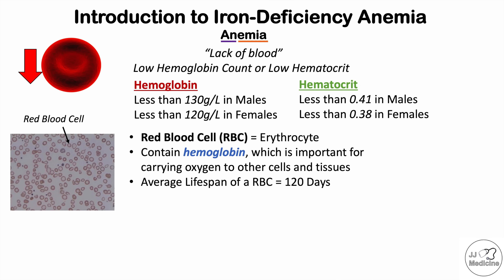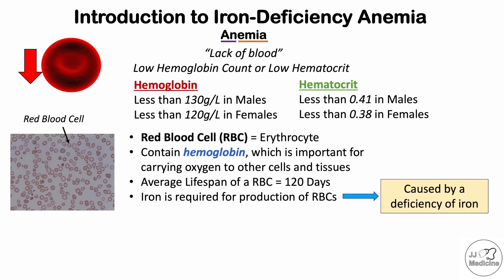The average lifespan of a red blood cell is approximately 120 days. Iron is required for production of red blood cells — it's part of the structure of hemoglobin. So if there's not enough iron, we're going to get iron deficiency anemia. Iron deficiency anemia is an anemia — a low hemoglobin count — caused by a deficiency of iron.